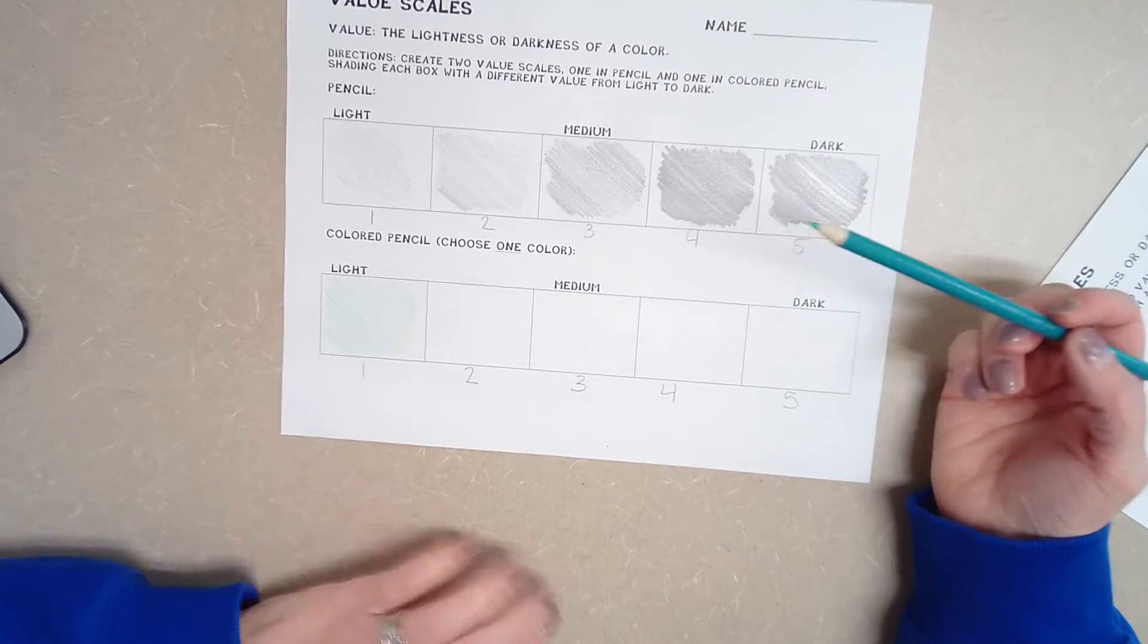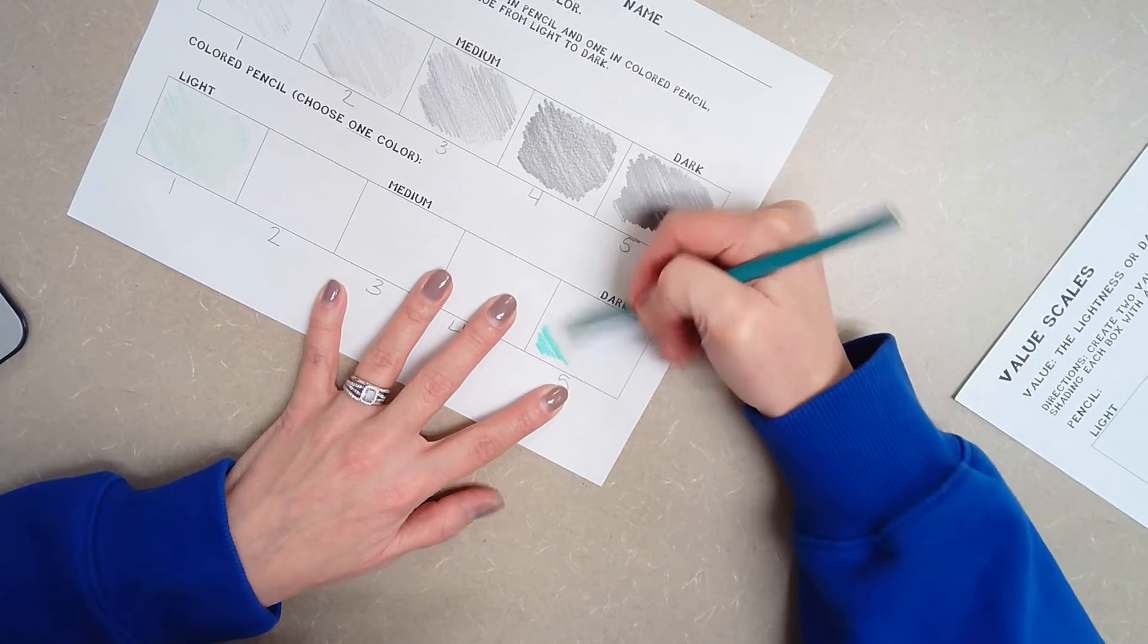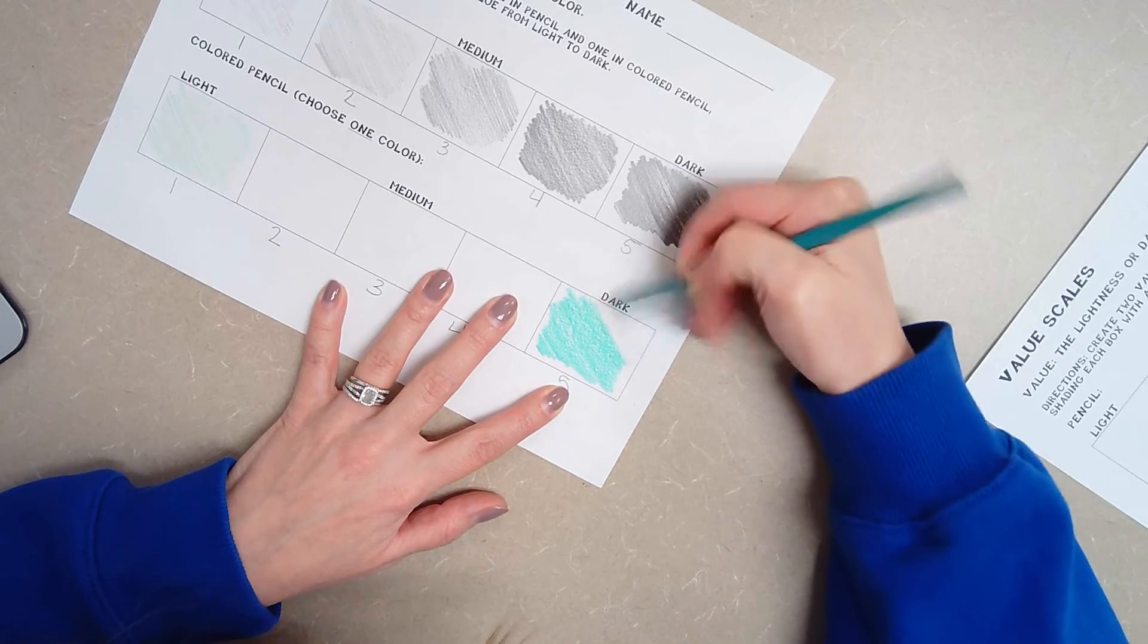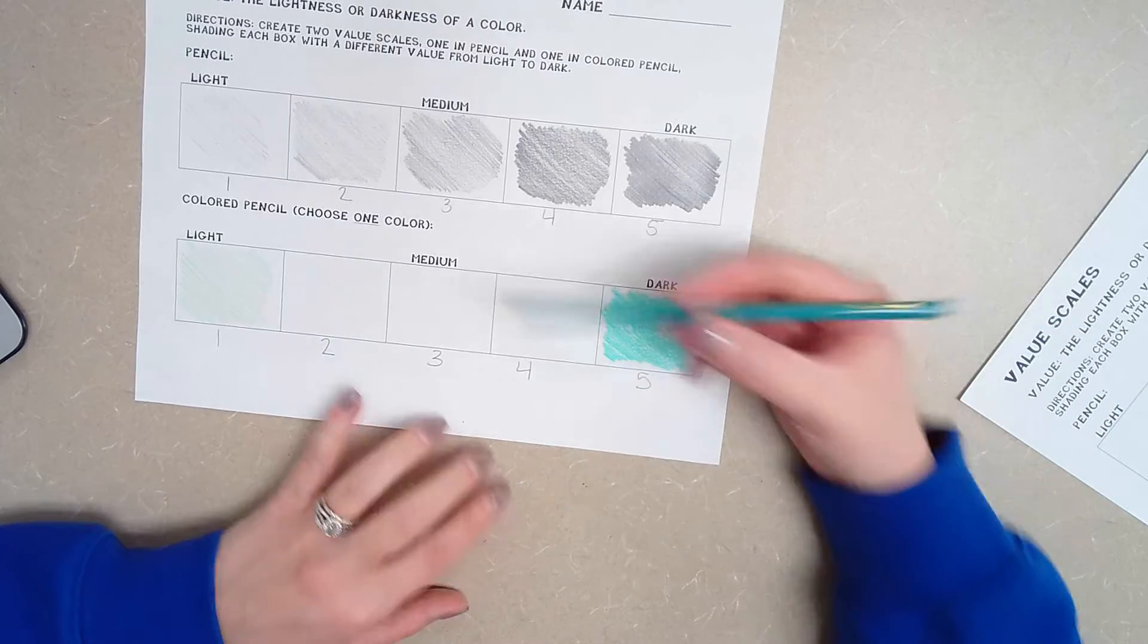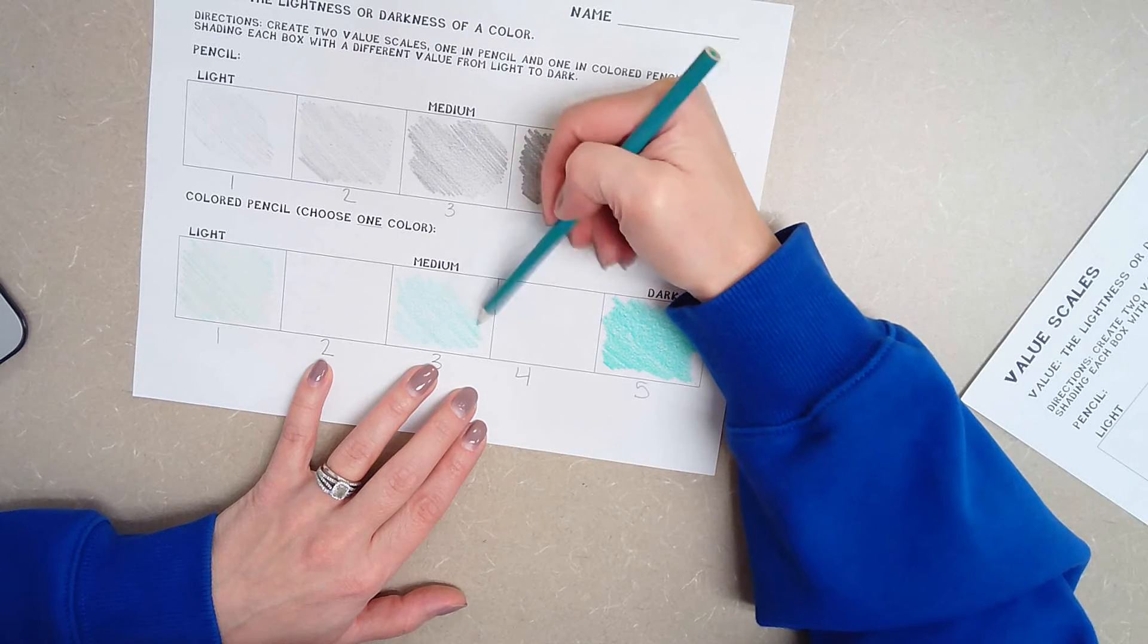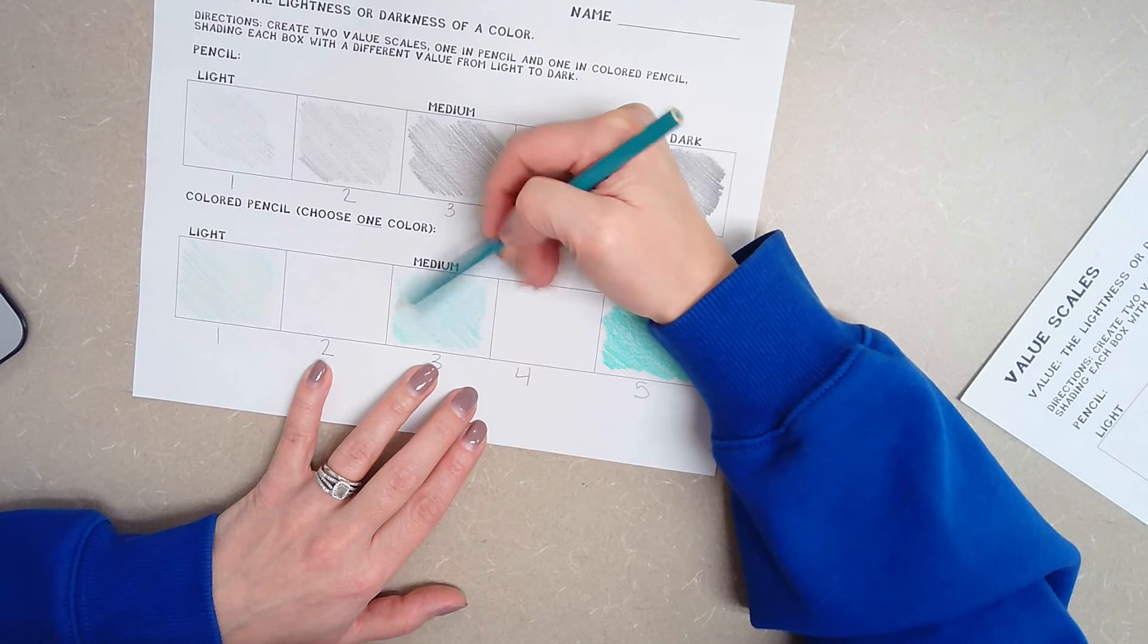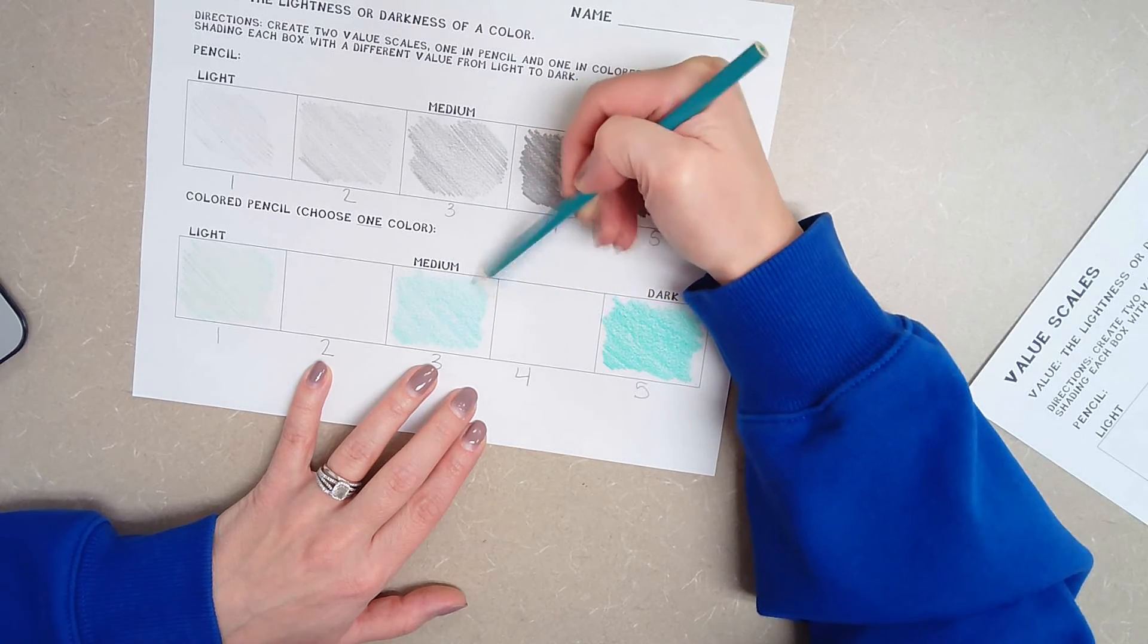So I press down really, really lightly. And then I press down really, really hard, as hard as I can go. And then number three is somewhere in the middle. So I'm just pressing down like I normally would.